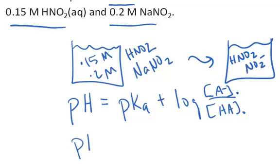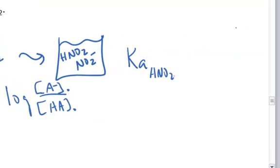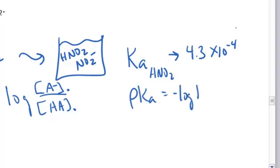So first of all, we're looking for the pH. The pKa, we can either look it up in a table or we can calculate it based on the Ka. The Ka for HNO2 nitrous acid is 4.3 times 10 to the minus 4. So the pKa of that acid is just the negative log of the Ka, which is equal to 3.37.